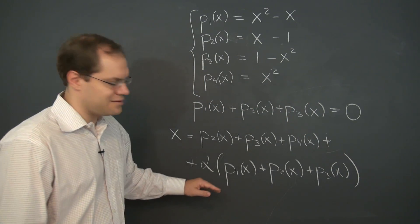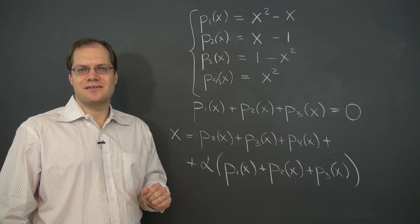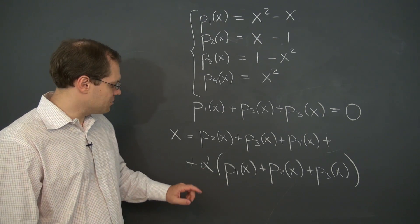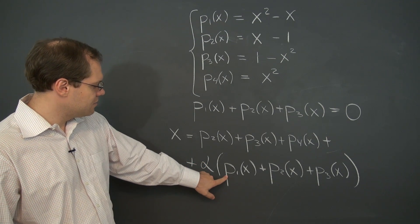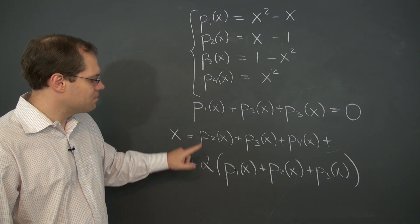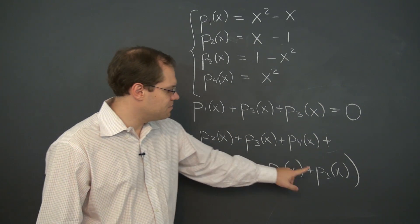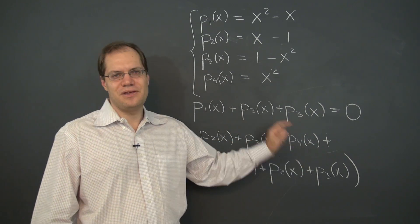All right, and this completes this exercise. Now if you want to write it as a proper linear combination, you might write alpha p1, plus 1 plus alpha p2, plus 1 plus alpha p3, plus p4.